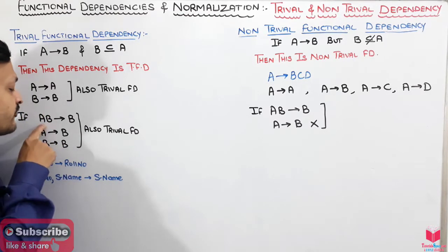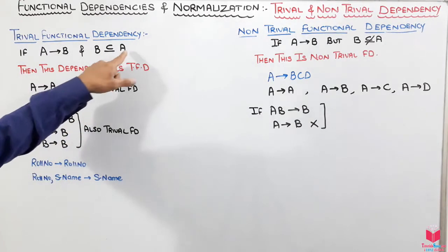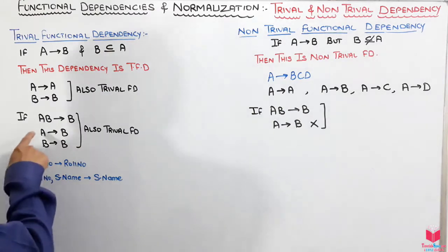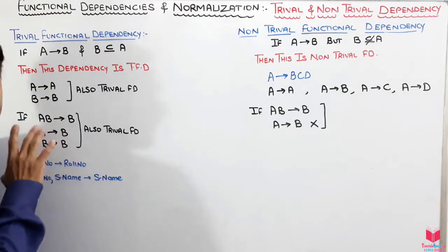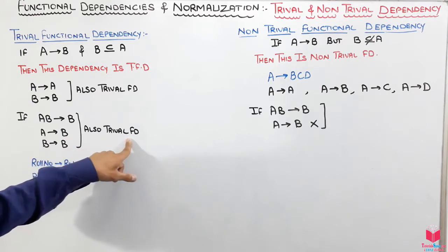Remember that if we have given this kind of dependency along with that B is a subset of A, then we will say that we can find A from B or B from A. This is all about the trivial functional dependency.